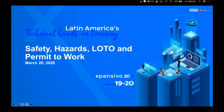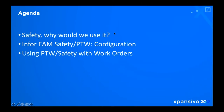All right, thanks Ernesto. So now we're going to be talking about safety, hazards, lockout/tagout, and permit to work right from EAM. In terms of the general agenda, we're going to be looking at why we use its safety, basic configuration of the safety and the permit to work, and then looking at it right from the work order and how we can associate that with the actual permit to work.